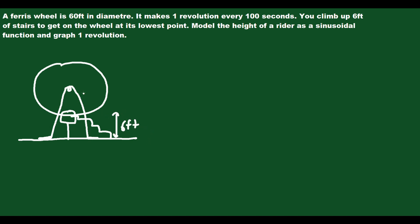We also know the diameter of the wheel is 60 feet. So from the very top of the wheel to the very bottom, that's 60 feet — that's the diameter. Obviously this isn't to scale, but that's okay. We also know that it makes one revolution every 100 seconds, so we're going to keep that in mind. Now we're going to try to model the height of a person on the wheel starting at the bottom as you go around using an equation.